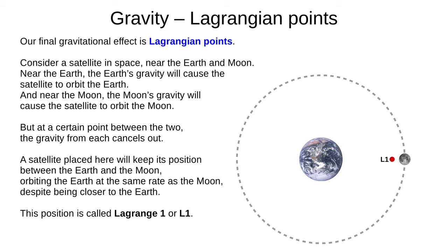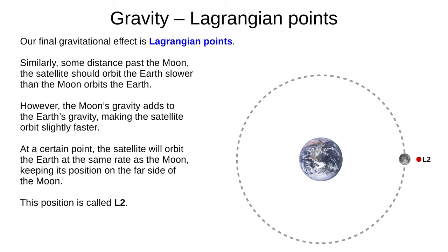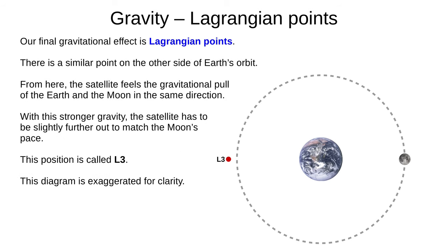These diagrams are to scale, except for the size of the Earth and Moon, though I've approximated the Moon's orbit as a circle. Similarly, some way past the Moon, the satellite should orbit slower than the Moon. But the Moon's gravity adds to the Earth's gravity, making the satellite orbit slightly faster. At a certain point, the satellite will orbit the Earth at the same rate as the Moon, remaining on the far side of the Moon — this position is called L2. There's a similar point on the other side of the Earth, where the satellite feels the gravitational pull of both Earth and Moon in the same direction. With this stronger gravity, the satellite has to be slightly further out to match the Moon's orbit. This position is called L3.